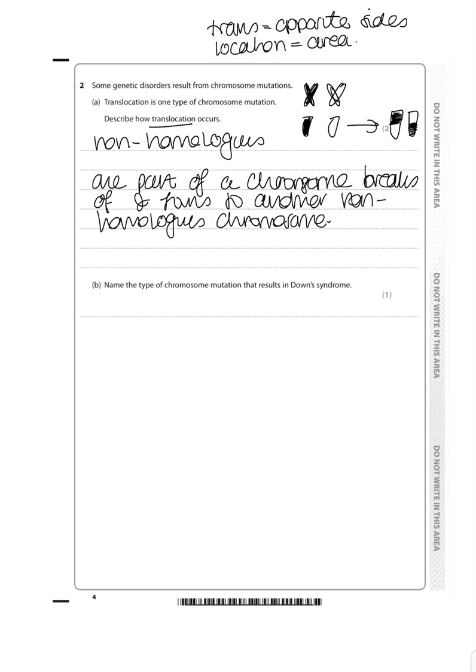But this is the correct answer. And so, name the type of chromosome mutation that results in Down syndrome. Down syndrome occurs by non-disjunction.